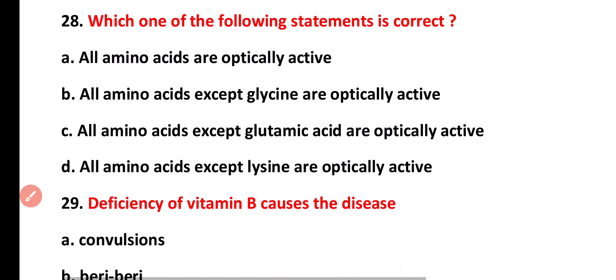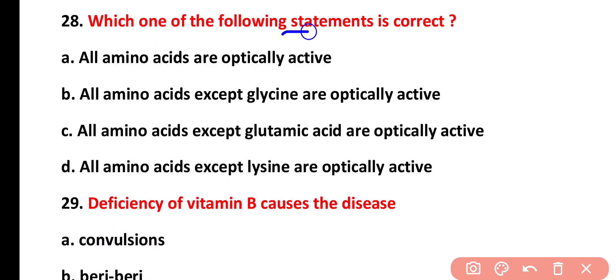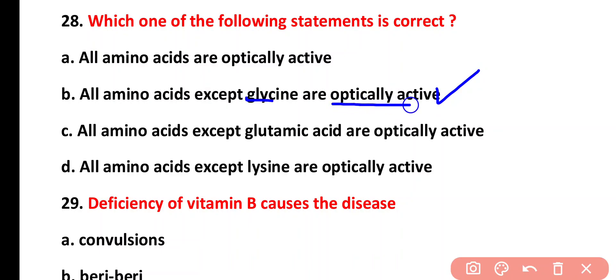Question twenty-eight: which one of the following statements is correct? Options: all amino acids are optically active; all amino acids except glycine are optically active; all amino acids except glutamic acid are optically active. The correct answer is option B: all amino acids except glycine are optically active.